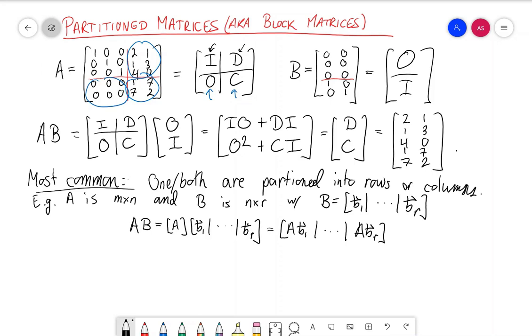So for example, we can look at these two matrices here and I can partition this B into columns. And then using what I just talked about, AB is AB1, AB2, where B1 and B2 are the two columns.